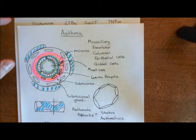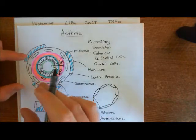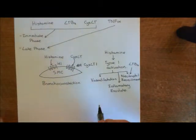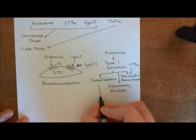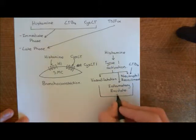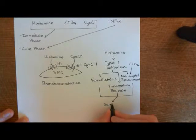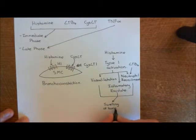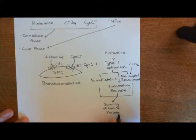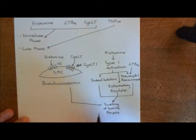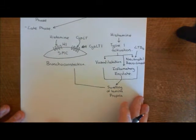Both bronchoconstriction and the swelling of the lamina propria together lead to obstruction of the airways. The lamina propria swells and pushes the basement membrane back; even if the smooth muscle cell layer wasn't contracting, that would cause obstruction of the lumen. But it's made worse by the smooth muscle cell contracting around it. So both of these things — the bronchoconstriction and the swelling of the lamina propria — lead to obstruction of the airways, and this is the classic main symptom of an asthmatic attack.